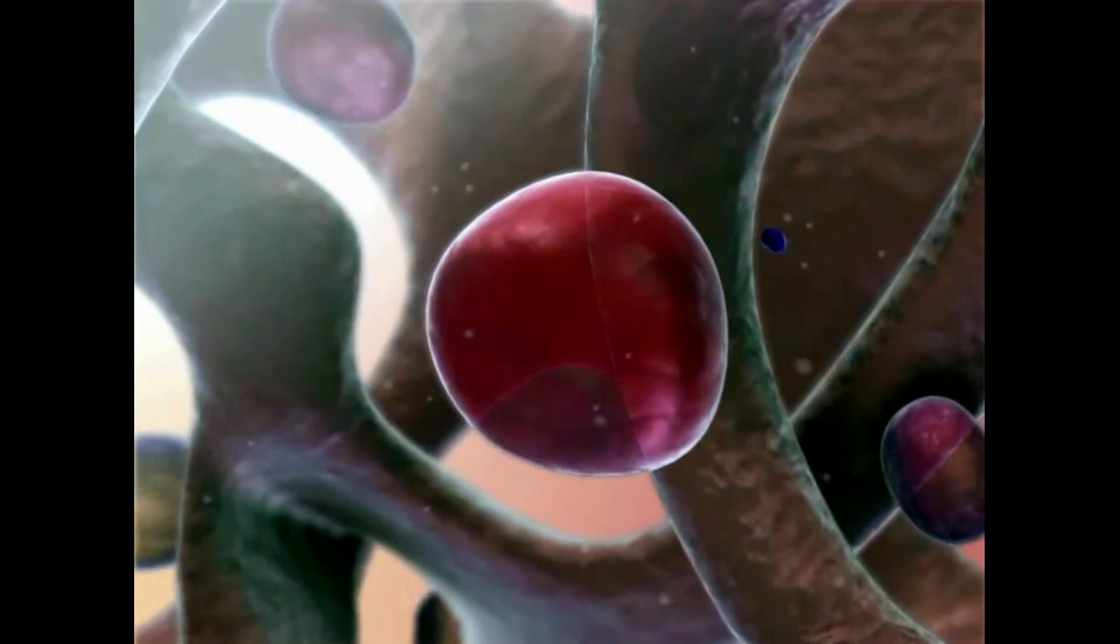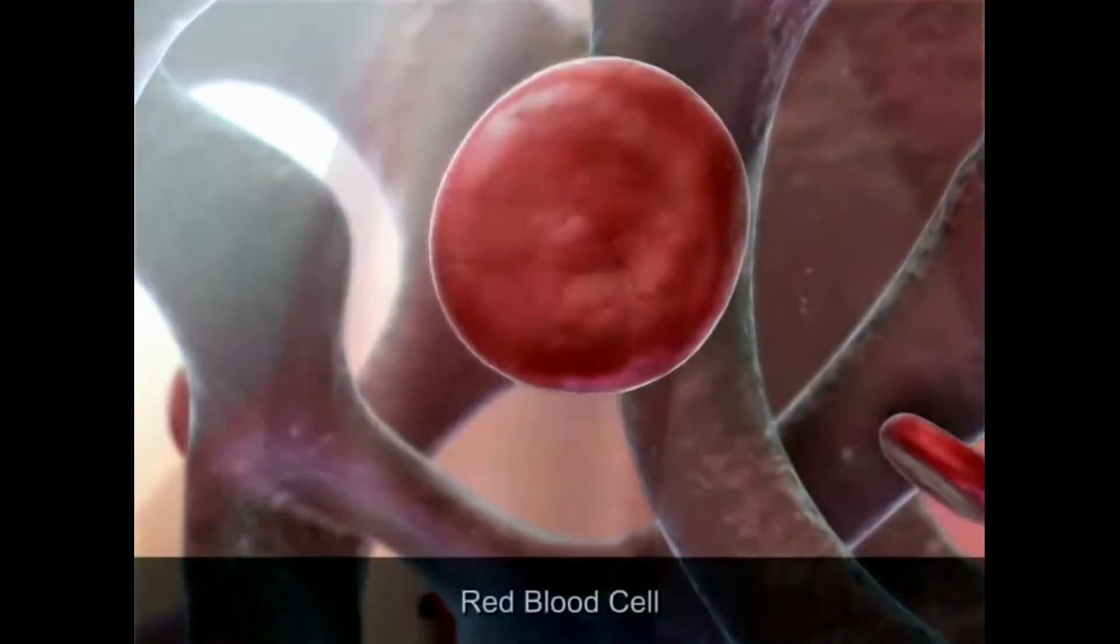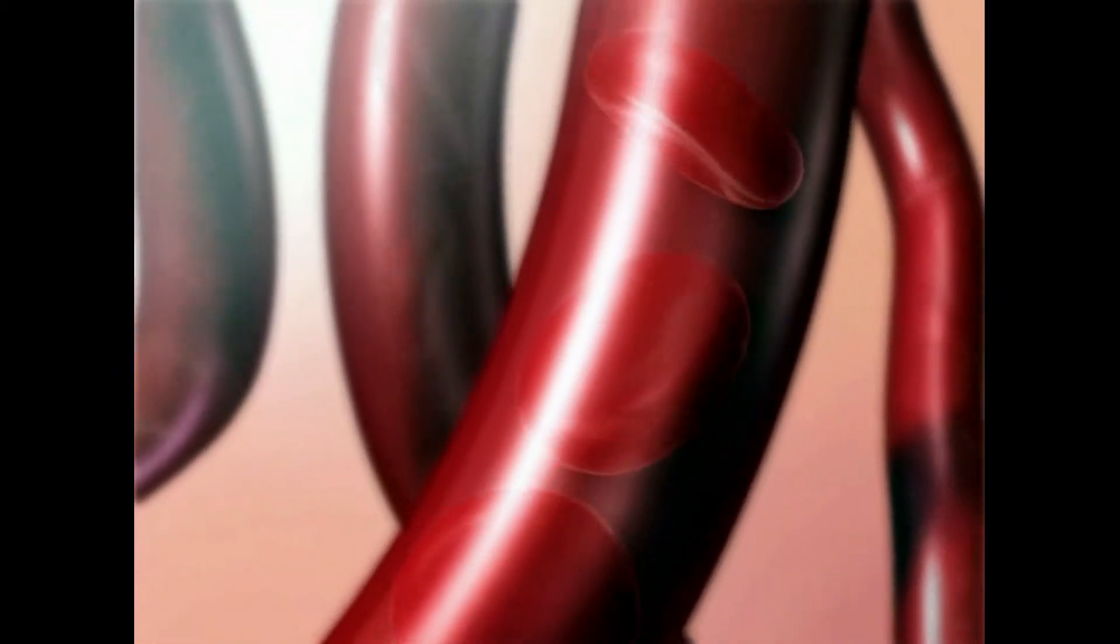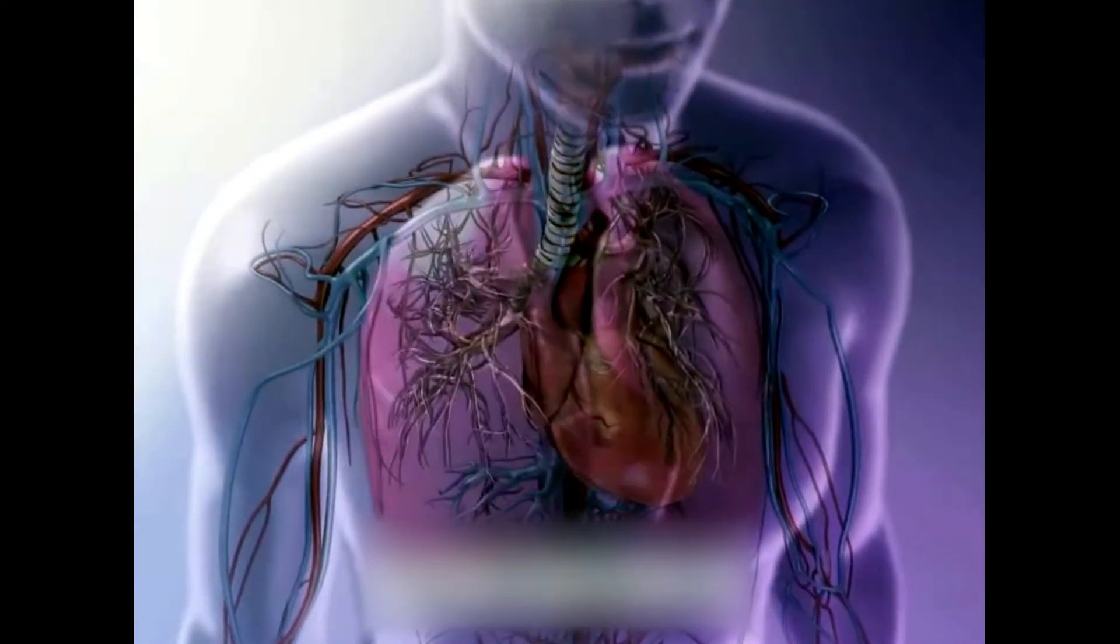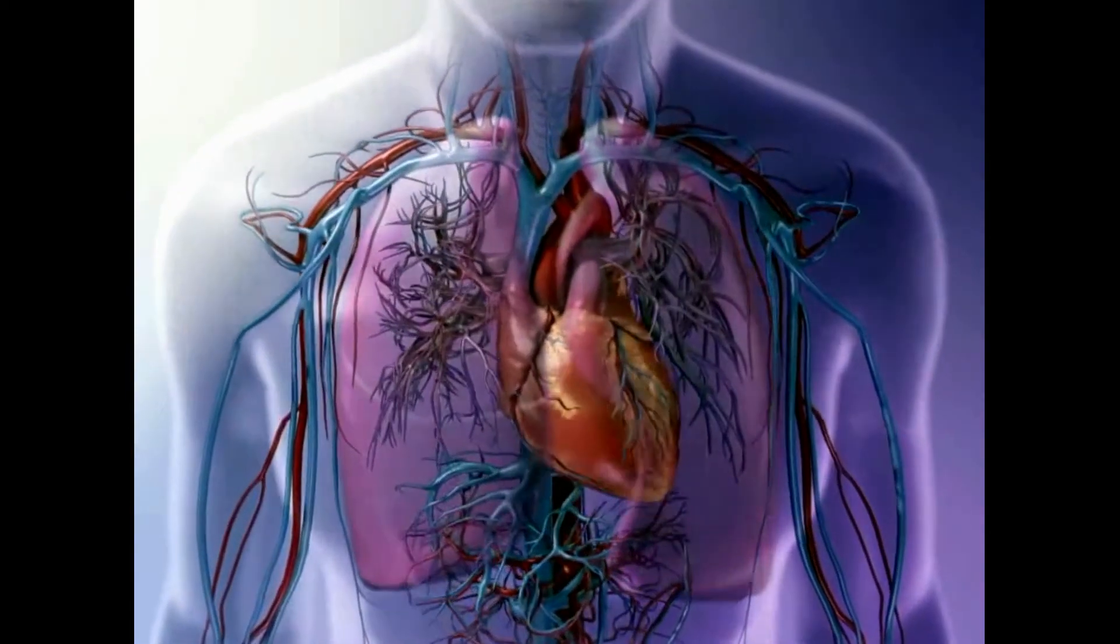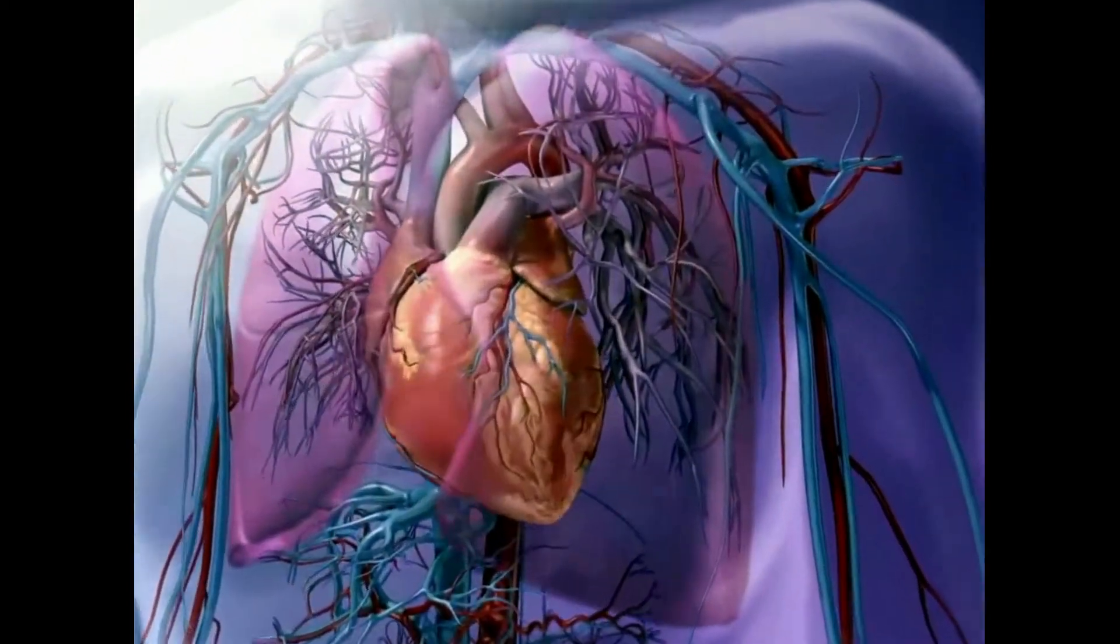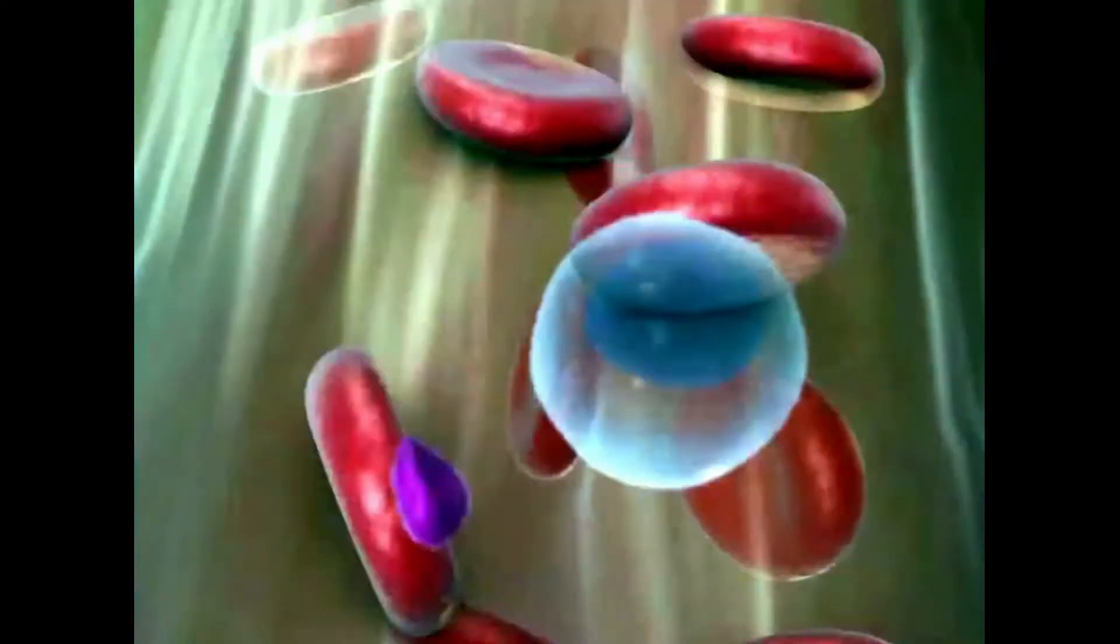Mature red blood cells enter the bloodstream via enlarged capillaries known as sinusoids. The bloodstream delivers oxygen to cells and removes carbon dioxide waste through a process called internal respiration. In the lungs, oxygen is absorbed into the erythrocytes in the bloodstream.